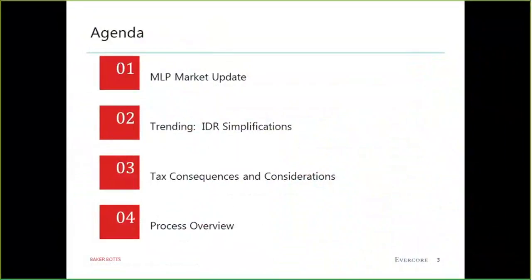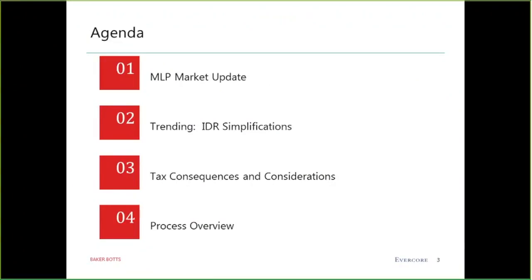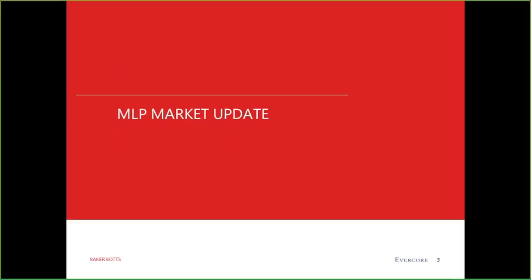Today's agenda involves first an MLP market update — what's going on with MLPs and what factors in the industry might be leading people to consider restructuring their incentive distribution rights. Second, we'll talk about different types of simplifications, including click-through mergers. Third, we'll cover tax consequences of these deals. Fourth, we'll discuss the committee, board, and unit holder processes to evaluate, negotiate, and approve these transactions.